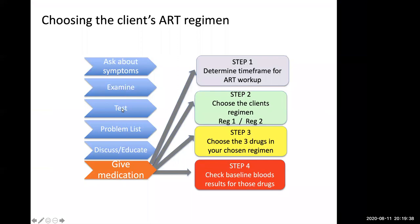Make sure that you do basic tests like CD4 count, your baseline tests, urine dipstick, have a problem list from your patient, educate your patient, and give medication. In giving the medication, there are at least four steps. The first step is to ask: is this a patient we need to give ARVs today or later? She's got cryptococcal meningitis. When is the right time to initiate ARVs? She was discharged five weeks ago. If she has been treated for less than five to six weeks, we know she's at risk of a condition called IRIS — immune reconstitution inflammatory syndrome.